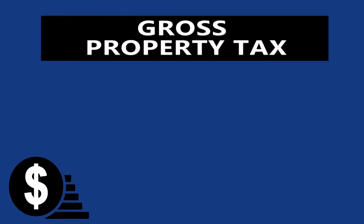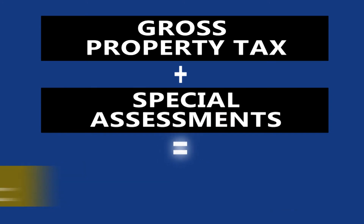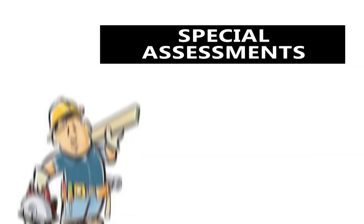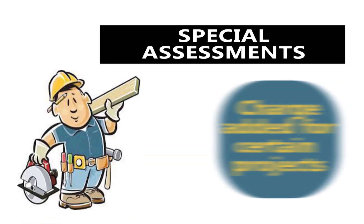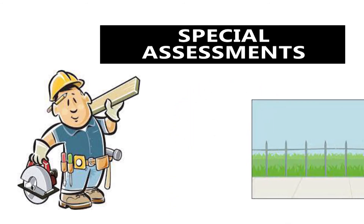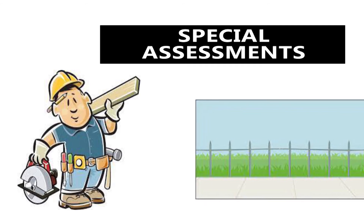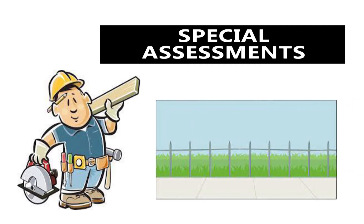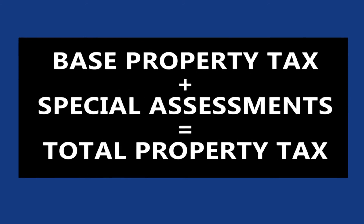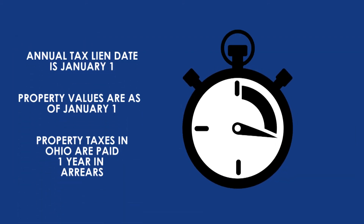Gross property tax plus special assessments equals the total property tax. In addition to the gross property tax, taxpayers may also be subject to special assessments — a charge added for certain projects such as installing sidewalks, water lines, sewer lines, or storm water systems. The gross property tax plus the special assessments equals the total property tax for a period of time.